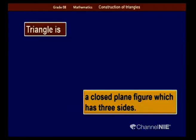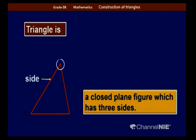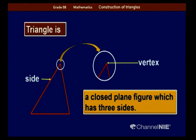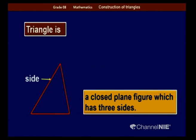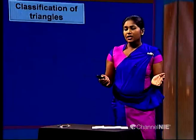A triangle is a closed plane figure which has three sides. We can draw a line — this line we call a side, and there are three sides in a triangle. Each corner point is called a vertex, and there are three vertices. The arc indicates an angle, and there are three angles for this triangle.